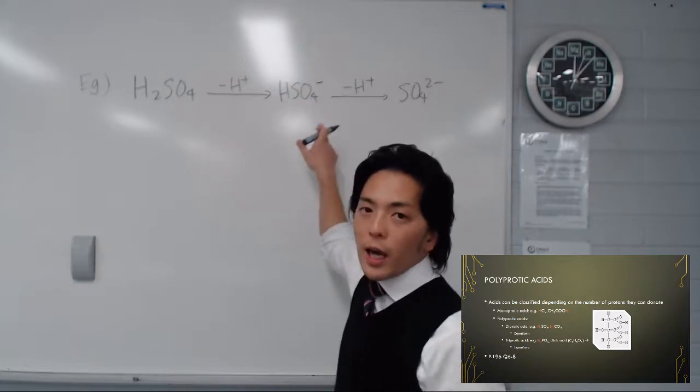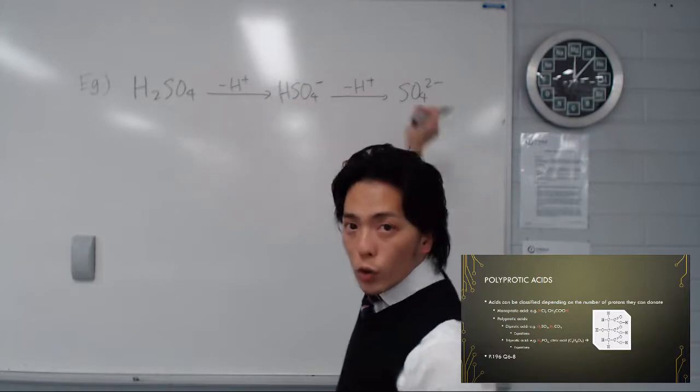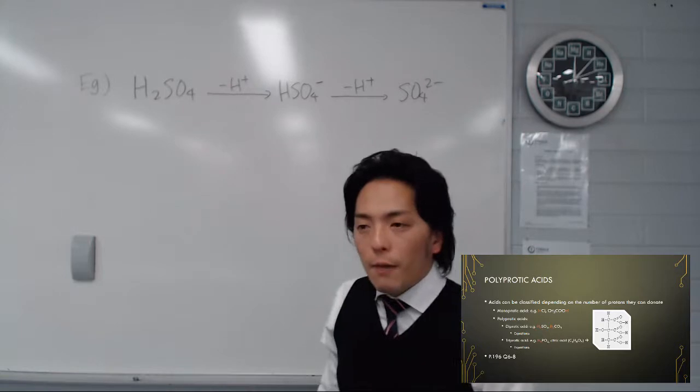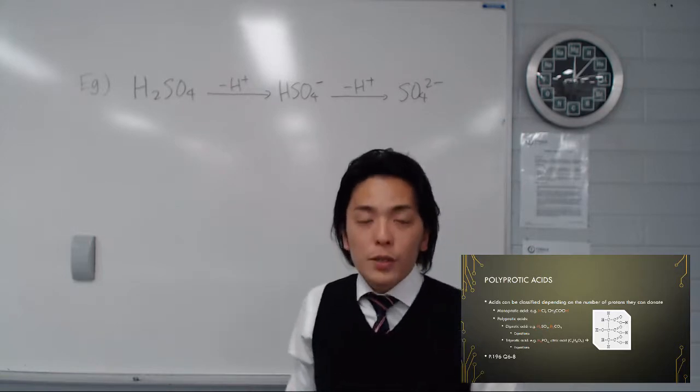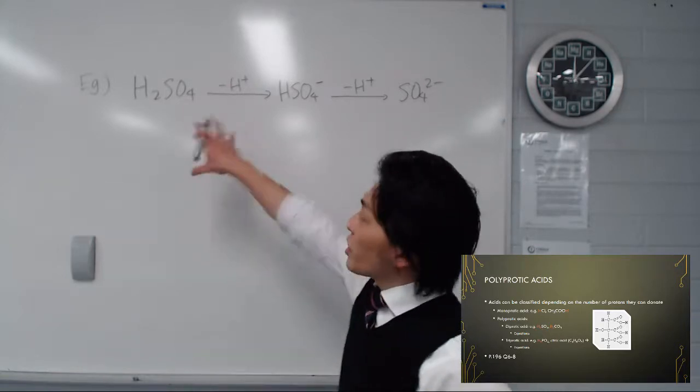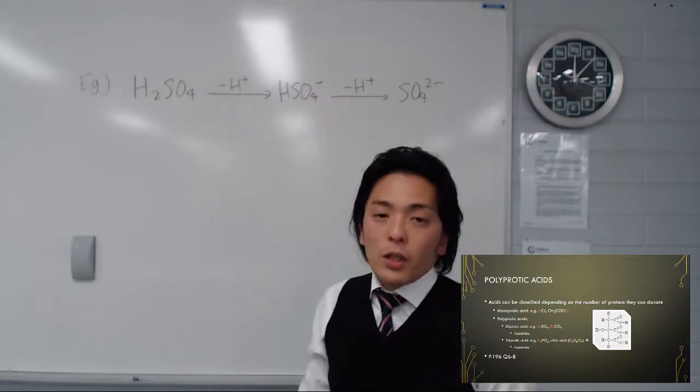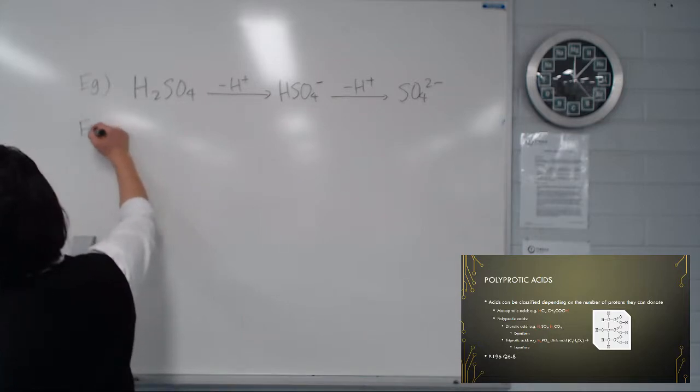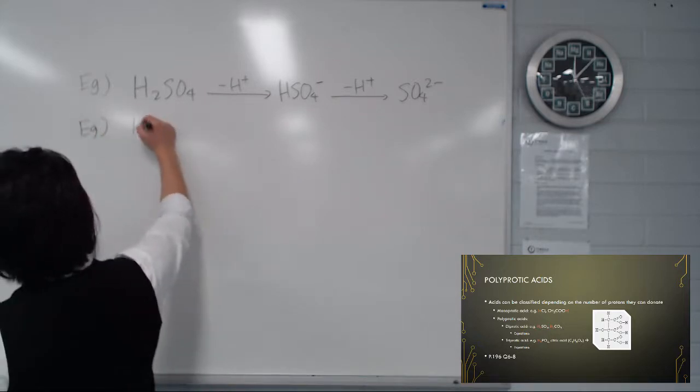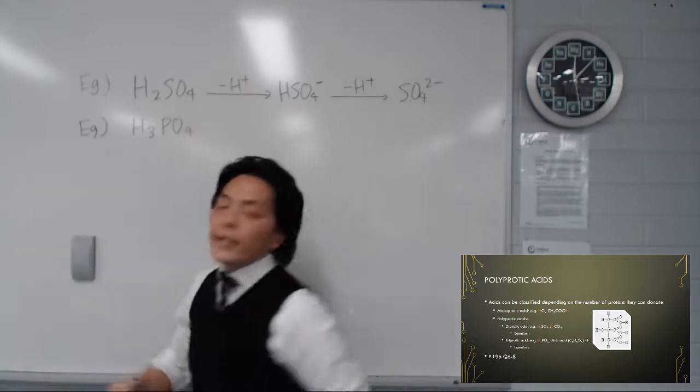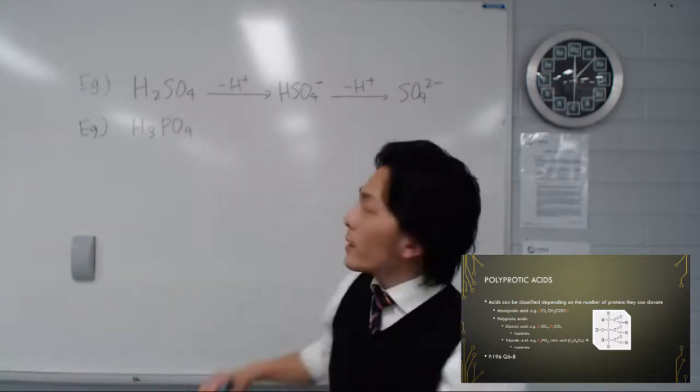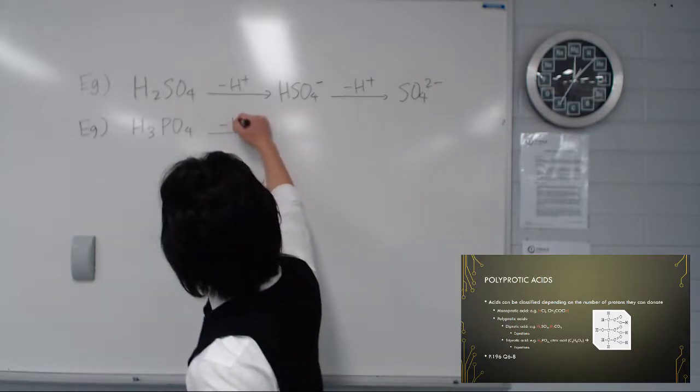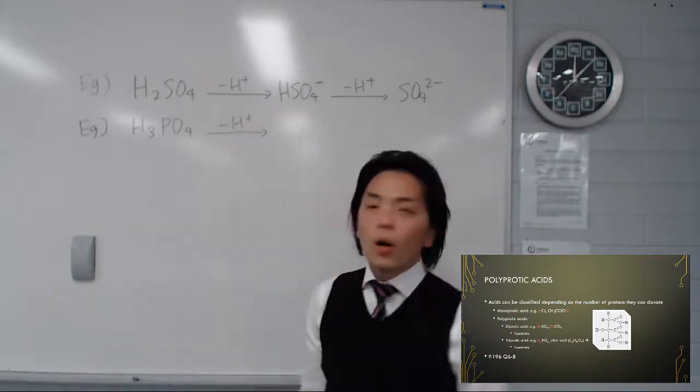At this point HSO4-, if you remember, this is an amphoteric substance because it can gain proton or lose proton. So intermediate forms are often amphiprotic or amphoteric substances. H2CO3 is basically the same so I'm going to skip that. Let's go to the triprotic one. So H3PO4 phosphoric acid does very much the same. If you take one proton away...